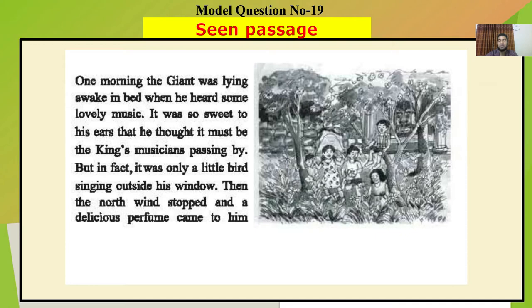Dear students, I am going to discuss model question number 19 from your Nabodod book. Take your Nabodod book and go to model question number 19. There is a passage and beside the picture there is also text. This picture is actually depicting the garden of the selfish giant. Some children are in the garden and they are playing there happily. But one morning the selfish giant was lying awake in his bed and whenever he heard some lovely music, it was sweet to his ears and he thought that this music must be the king's musicians passing by.